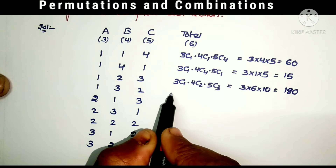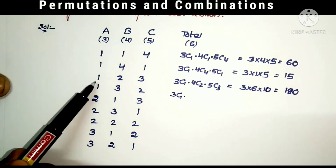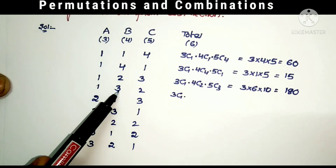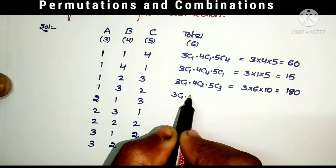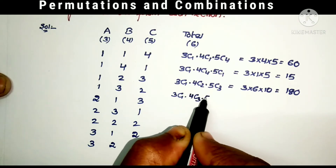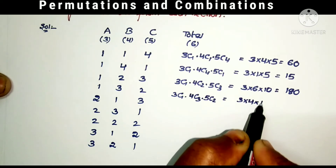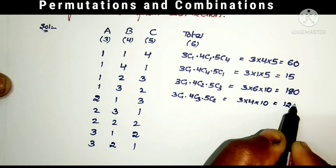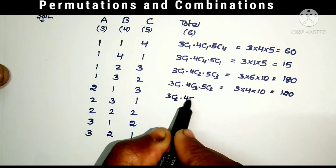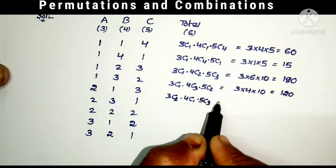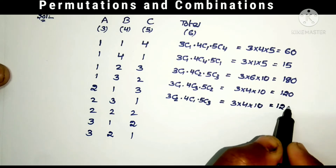The fourth combination is 3C1 × 4C3 × 5C2: selecting 1 from 3, 3 from 4, and 2 from 5 questions. This equals 3 × 4 × 10 = 120. The fifth combination is 3C2 × 4C1 × 5C3: 3C2 = 3, 4C1 = 4, 5C3 = 10, giving the same answer of 120.